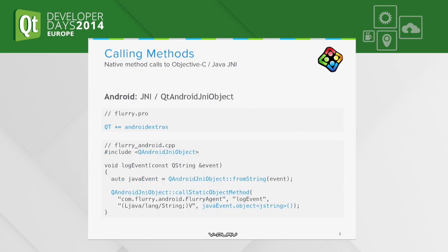On Android things are a little bit different. As mentioned in an earlier talk today, you have to go through the Java Native Interface (JNI). Since Qt 5 there is a handy class called QAndroidJniObject. You can use it by adding the library in your project file with "QT += androidextras".